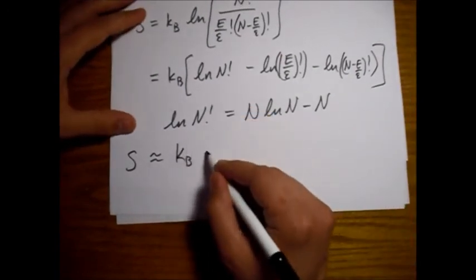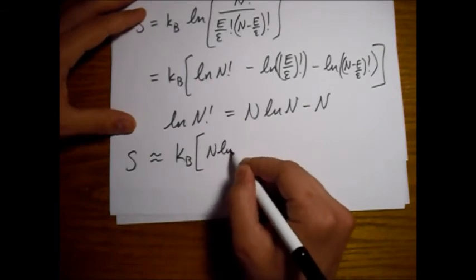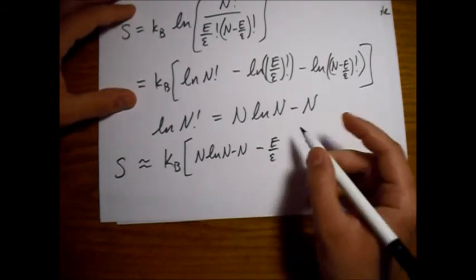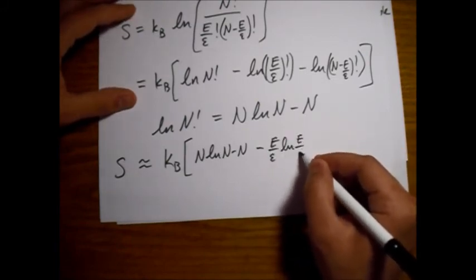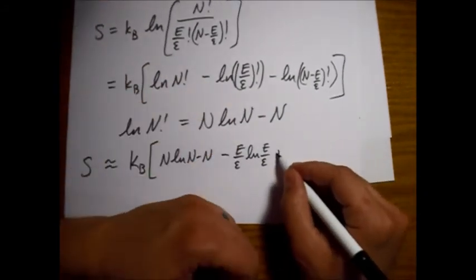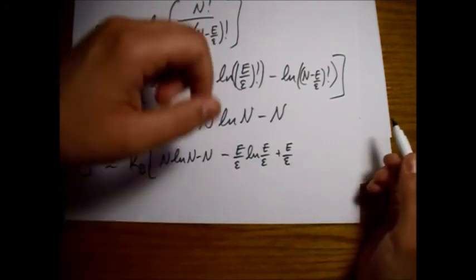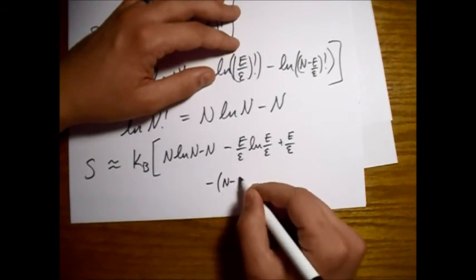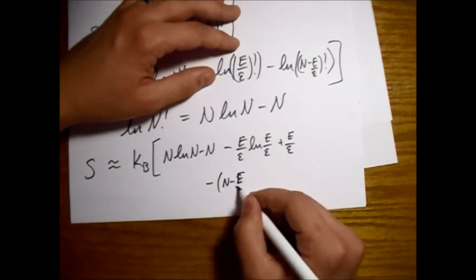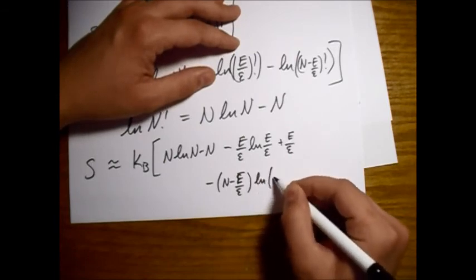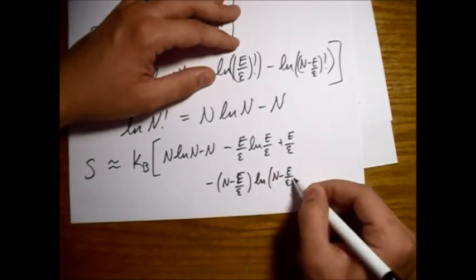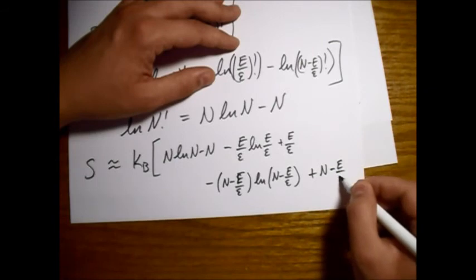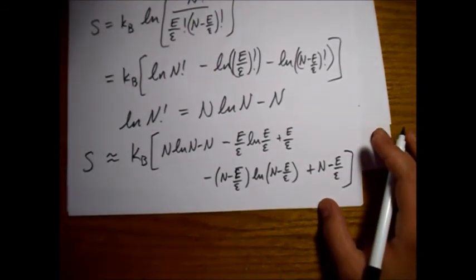So we have N ln of N minus N, minus big E over epsilon ln of big E over epsilon, plus big E over epsilon, and then minus N minus big E over epsilon ln of N minus big E over epsilon, plus N minus big E over epsilon. So we can clean this up a bit. This term will cancel with this term.